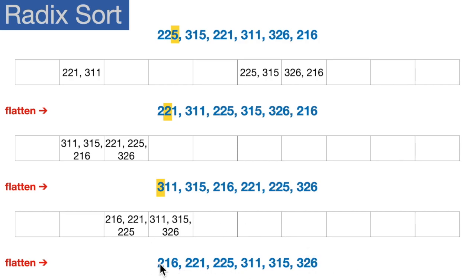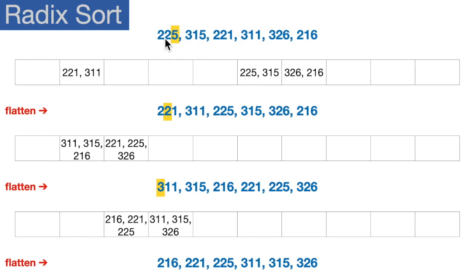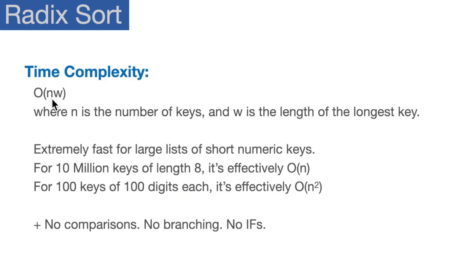We did three iterations because our longest item in the original list has only three digits. The number of iterations we do depends upon the length of the longest item in our starting list. In terms of time complexity, Radix sort is O(n times w), where n is the number of keys or items in the list, and w is the length of the longest key — in other words, the number of digits in the longest key. For example, 21657 would be five digits, so the time complexity becomes n times w.